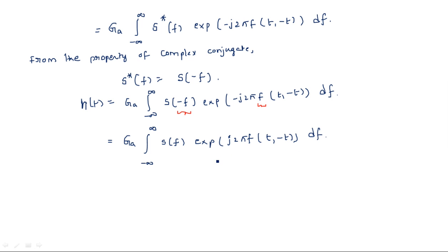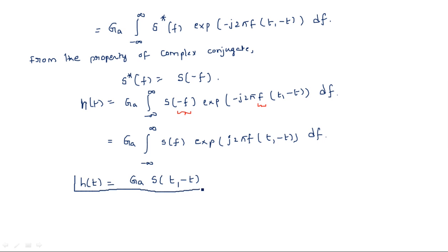After substituting -F with +F, we get H(T) = G_A · integral from minus infinity to infinity of S(F) · exp(j2πF(T₁ - T)) dF. This integral — the inverse Fourier transform of S(F) evaluated at time (T₁ - T) — is simply S(T₁ - T). Therefore H(T) = G_A · S(T₁ - T). This is the impulse response of the matched filter, derived by applying the inverse Fourier transform to H(F).